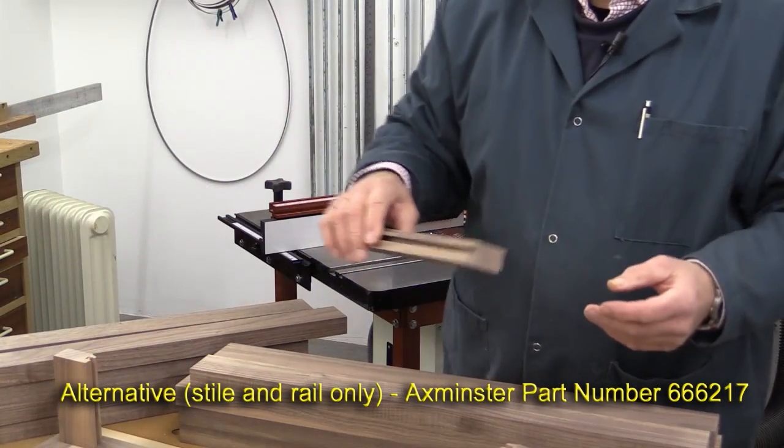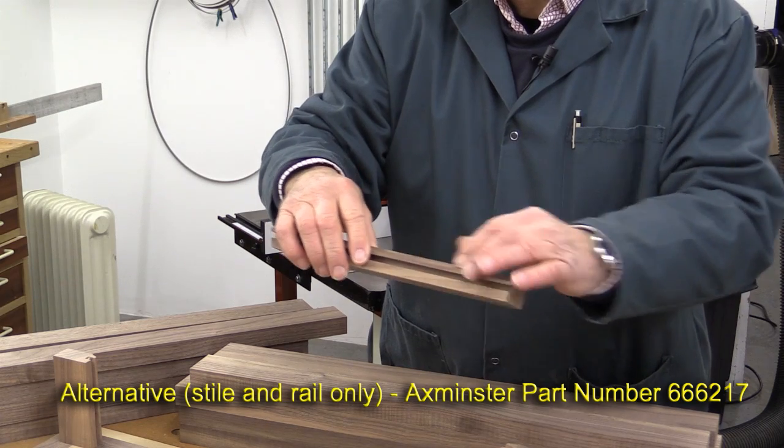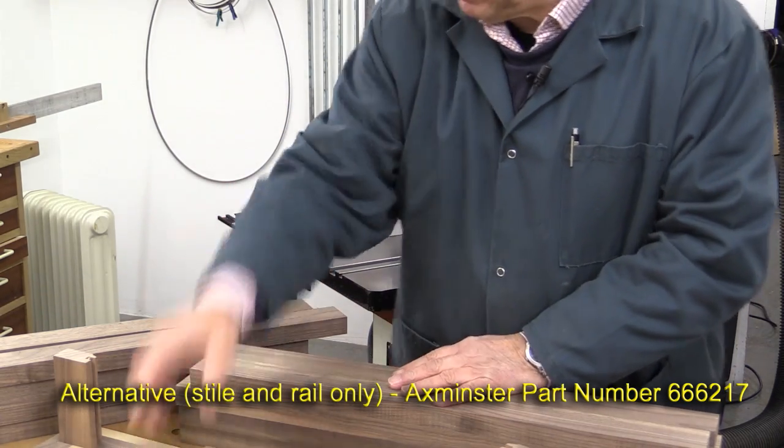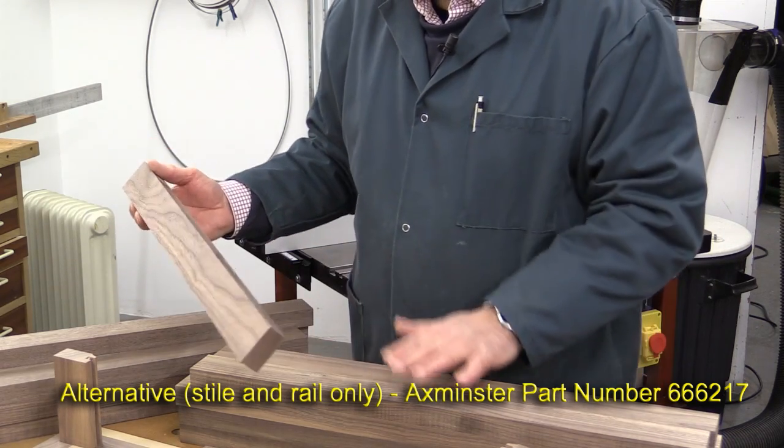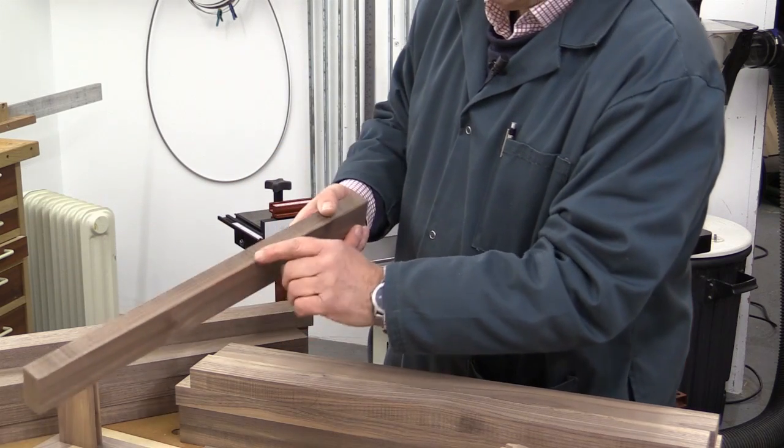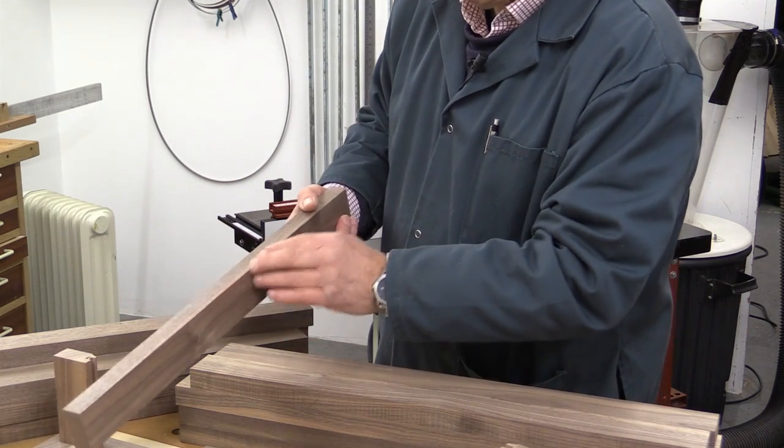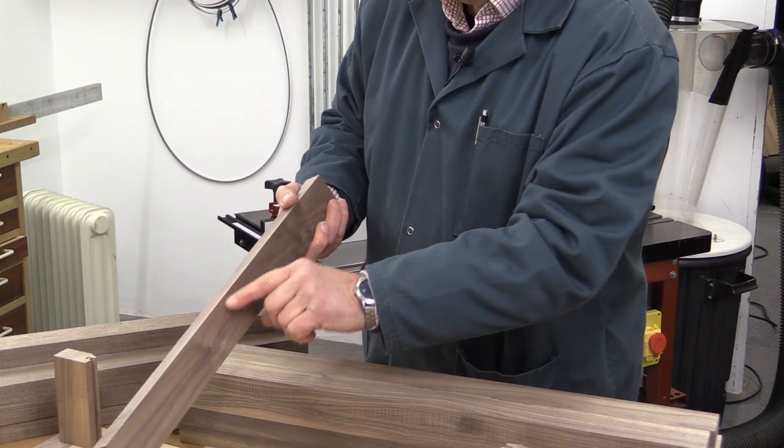Right, I'm all geared up to put this part of the panel raising cutter set moulding onto all this wood here. And what I've done is I've gone through all this wood. These are the rails and stiles for the sides of the pedestals. And I've chosen which face I want to do the cut on, and I've marked it with a red crayon.